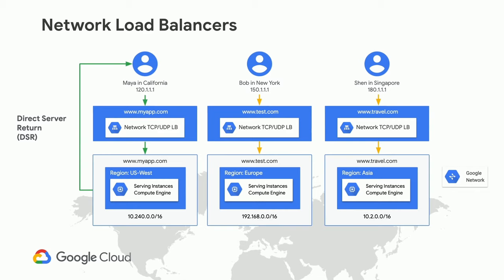In this example, I'm showing apps running inside GCP, each in a different region. You can see myapp.com is running in US West, test.com is running in Europe, and travel.com is running in Asia. In each case, I have a load balancer running in that region receiving traffic from customers on the internet and pushing them to myapp.com or test.com on the backend.